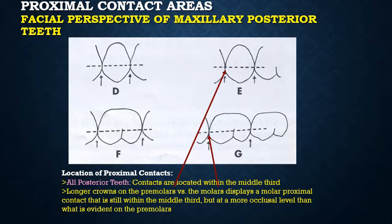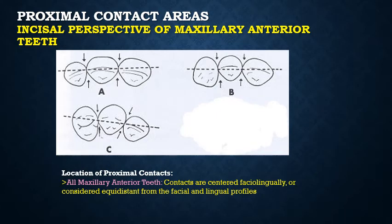From the facial perspective, the contact areas of maxillary posterior teeth are located in the middle one-third. However, since the crowns of the premolars are longer compared to the molars, the contact areas of premolars are more cervically placed, while molars have a more occlusally placed contact — though both are in the middle one-third of their respective crowns.